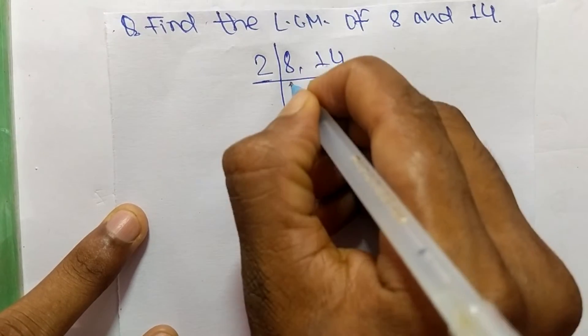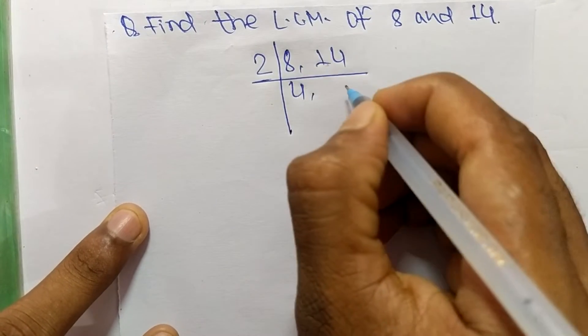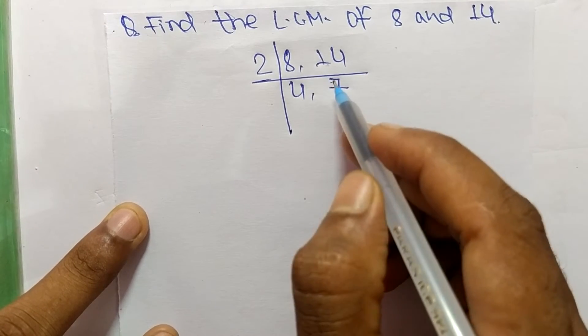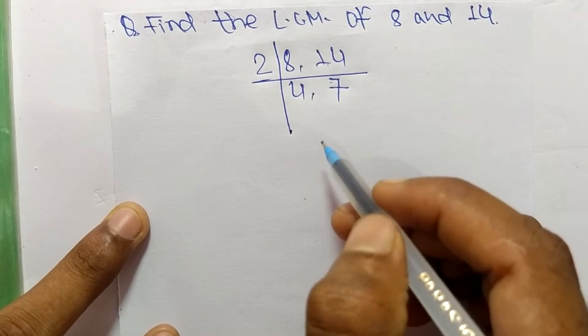So 2 times 4 means 8 and 2 times 7 means 14. So now we get here 4 and 7 which are not exactly divisible by same number.